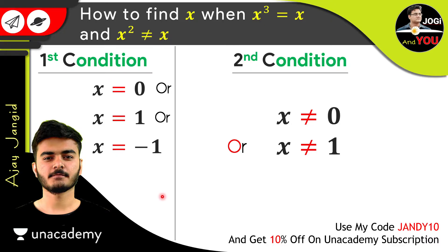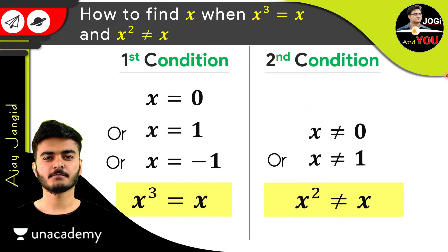So from the first condition we got x = 0, 1, or -1, and from the second condition we got x ≠ 0 and x ≠ 1. The first condition says x is equal to 0, but the second condition says x cannot be equal to 0. That's a clear contradiction — both things are opposite. Mathematics says if any value has a contradiction, simply reject that value.